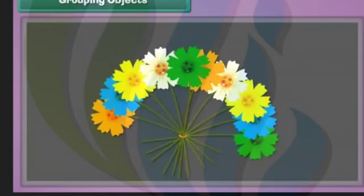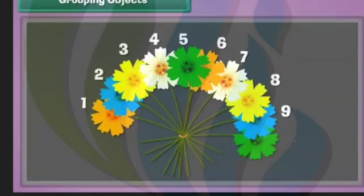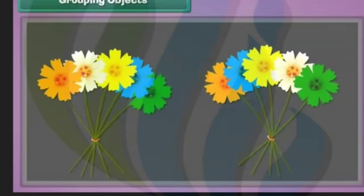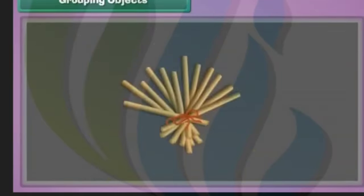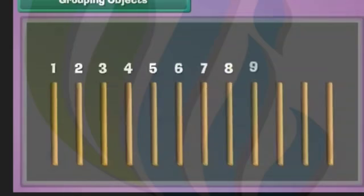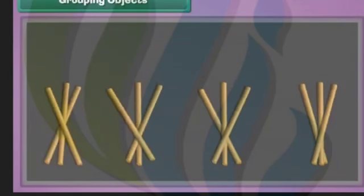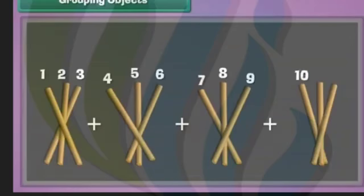Look at this bunch of flowers. There are ten flowers in the bunch. We can make two groups, each consisting of five flowers. Look at this bundle of sticks. There are twelve sticks in the bundle. To make four groups, each bundle will have three sticks. We can similarly group other objects.